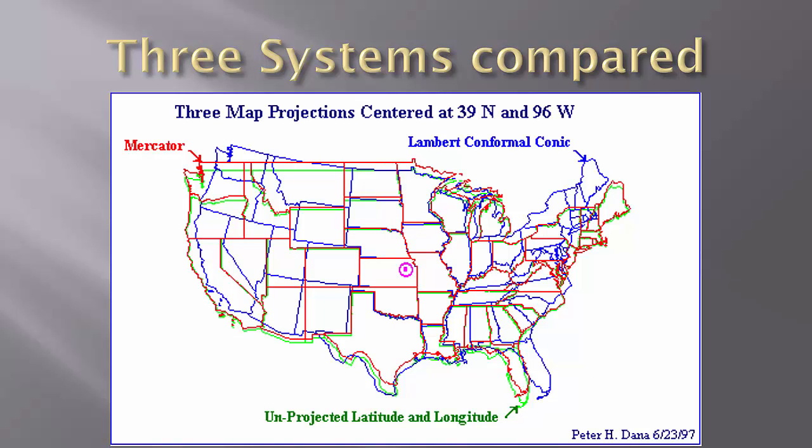Three systems are compared in this slide. Green is a geographic coordinate system using latitude and longitude. The blue lines is a Lambert conformal conic projection, which is used in State Plane. The red is Mercator, such as Universal Transverse Mercator projections. These will come up as you begin to work in ArcGIS.